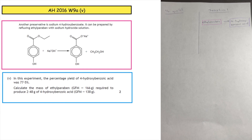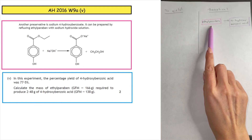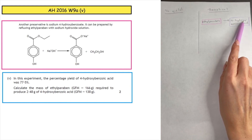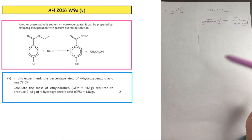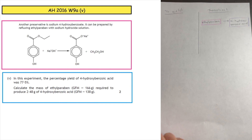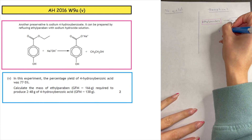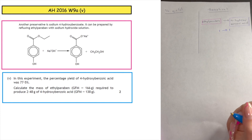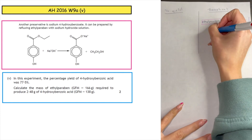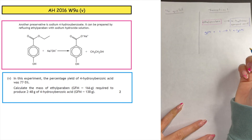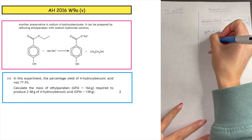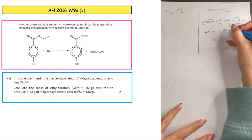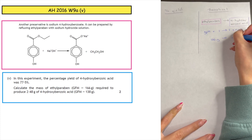This past paper question is from the Advanced Higher 2016, written 9a. It asks us to calculate the mass of ethyl paraben required to produce a given mass of 4-hydroxybenzoic acid with a percentage yield of 77.5%. We take down our mole ratio from the balanced chemical equation — it's a one-to-one ratio — and times through by the GFM. The GFM of ethyl paraben is 166 grams and that would produce 4-hydroxybenzoic acid at 138 grams.